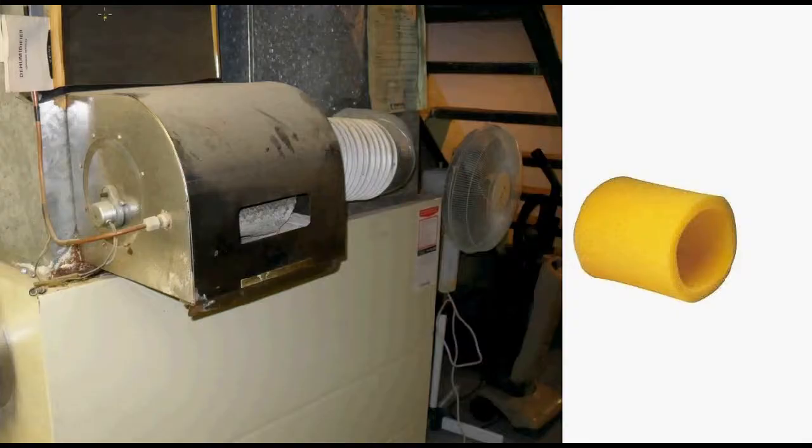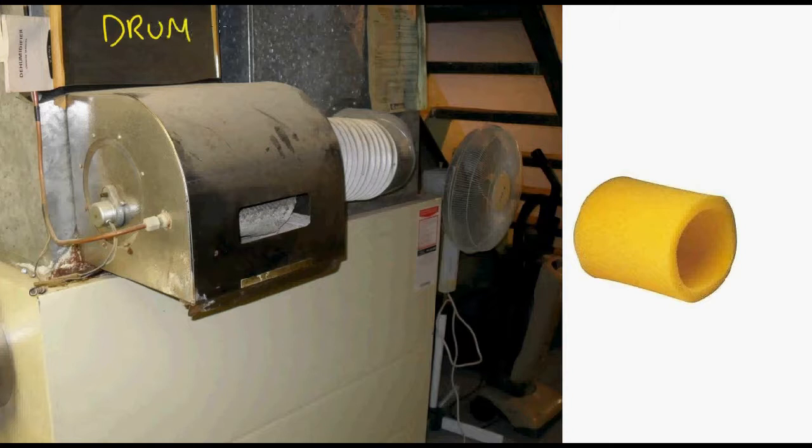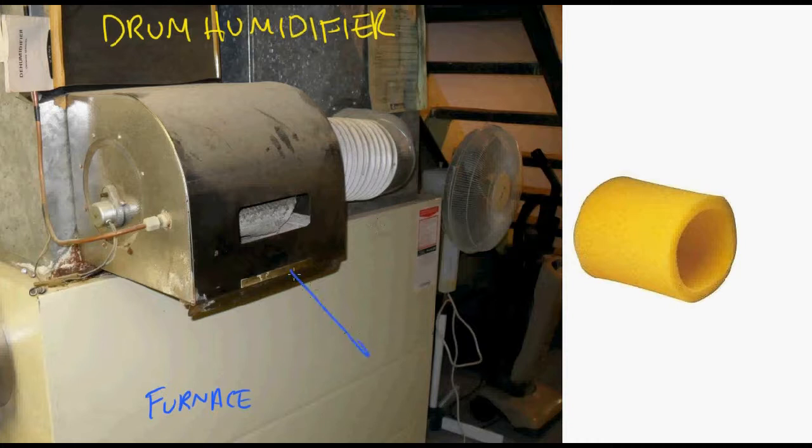So let's look at some systems that are used in furnaces. You might have one of these in a house if you live in a house. The cheapest one is a drum humidifier. So here's the furnace. And this is the drum humidifier. There's a water pan on the bottom here.